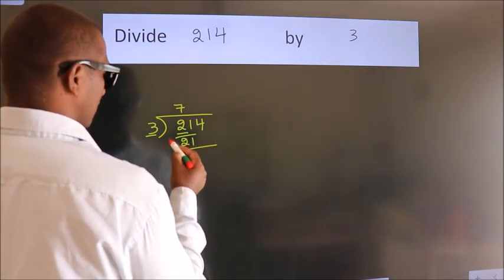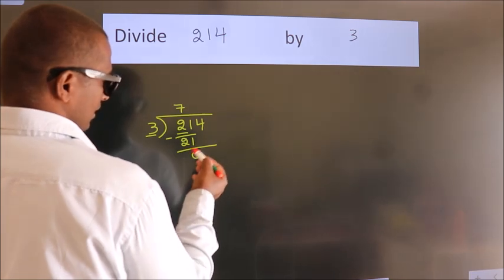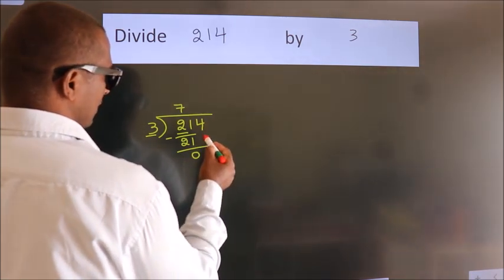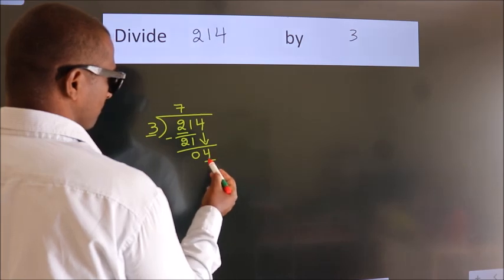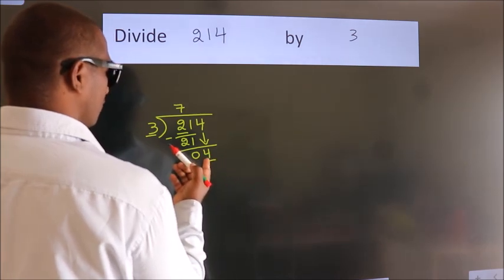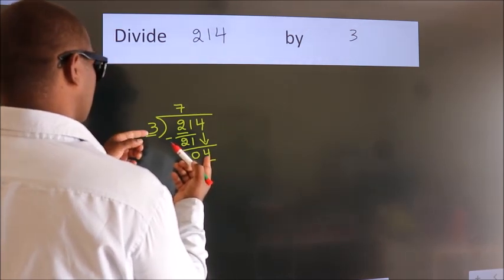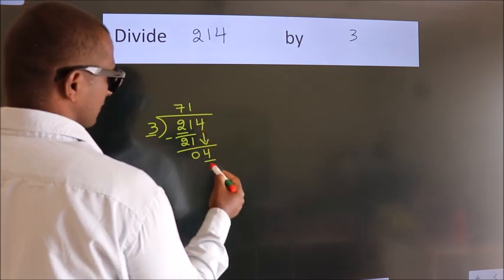Now we should subtract. We get 0. After this, bring down the next number. So 4 down. A number close to 4 in the 3 table is 3 times 1 is 3.